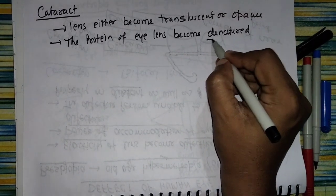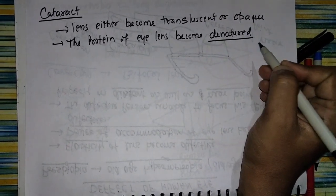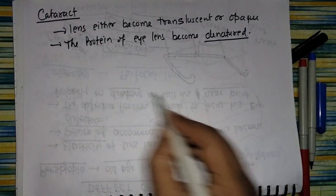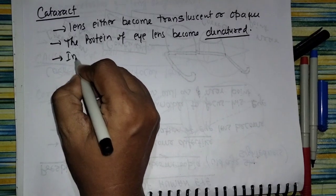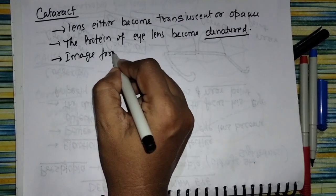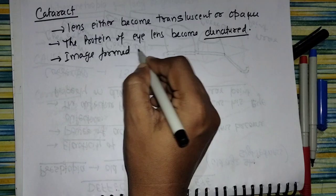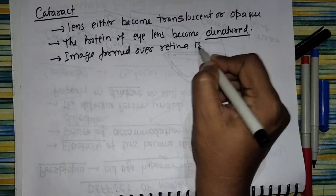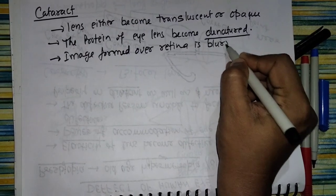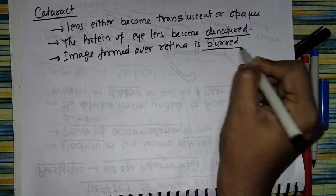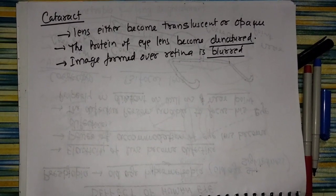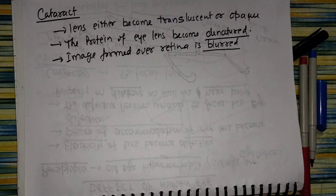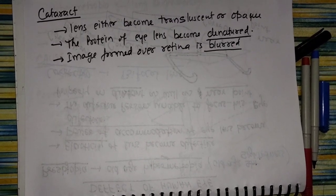Denatured means its pattern changes — its physical form changes. Due to this, the image formed over the retina becomes blurred. The image formation results in blurred vision. So due to this, the image cannot be formed properly.